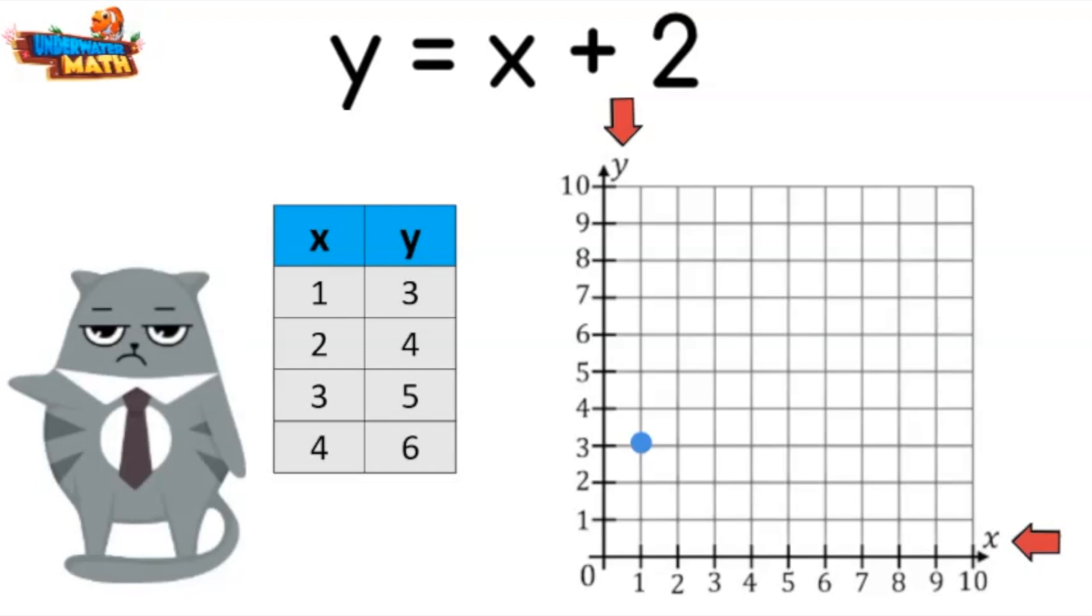Those are all the numbers on our table, but can we plot more? Sure we can. If the x coordinate is six, we just add two to find the y coordinate, that would be eight. Six and eight. We could also plot the x coordinate eight and add two to see the y coordinate is ten. Eight and ten.